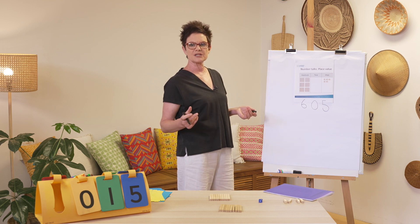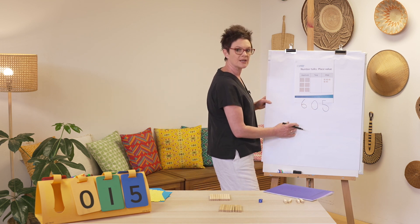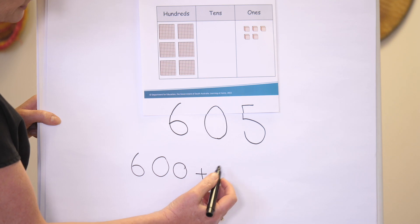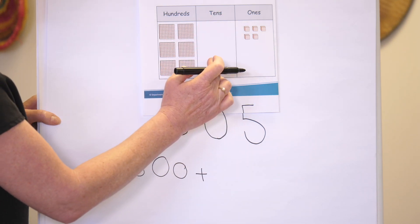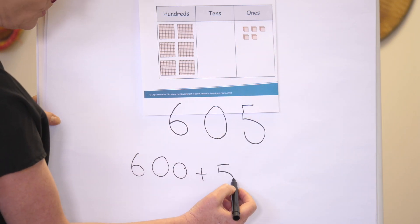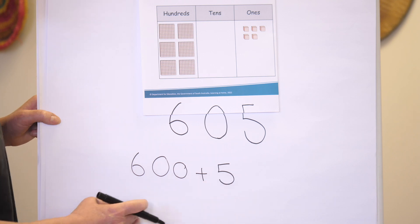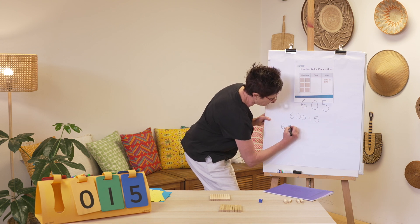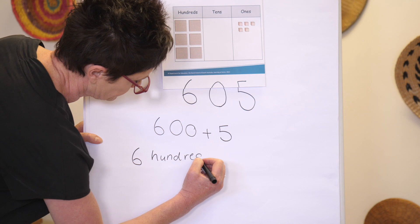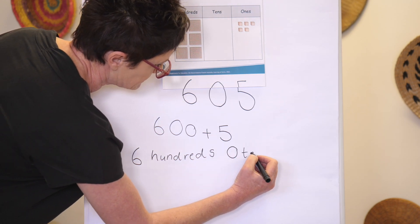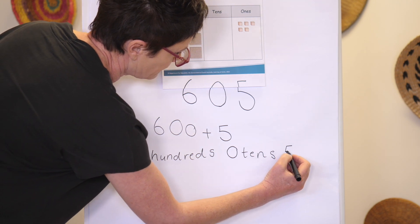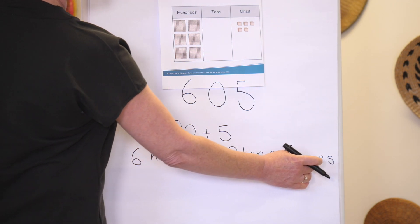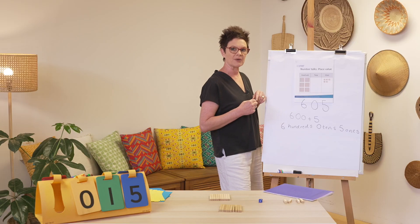Let's think of two ways we can represent that. If we partition this number we'll find that we have six hundred, none of these — zero tens — and five ones. This is how we write six hundred and five. Let's say it one more time: six hundred, zero tens, and five ones.